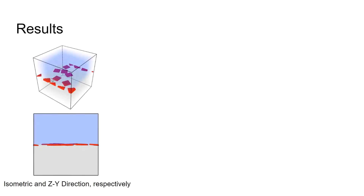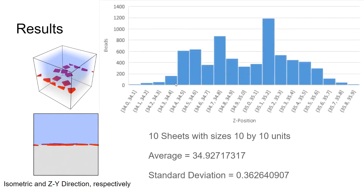Our first result shows sheets that are relatively large — the 10x10 sheet size. From the isometric view and the zy direction view, the sheets lie approximately at the interface. The blue and gray haze is rendered this way so you can easily see the sheets at the interface. You can see that the beads approximately travel towards around z=35, which is expected because this box is 70x70x70, and since half the solution is gray and half is blue, the interface should be at approximately the 35 mark. The standard deviation is relatively low, indicating all sheets are very close to the 35 mark, as expected.